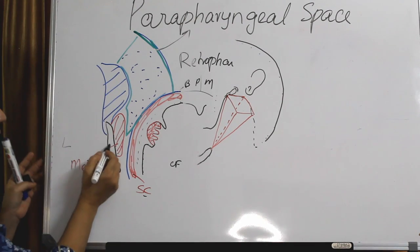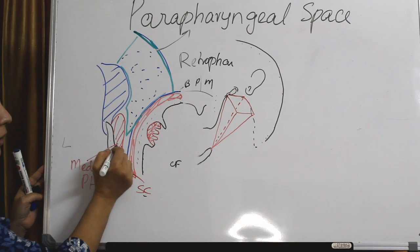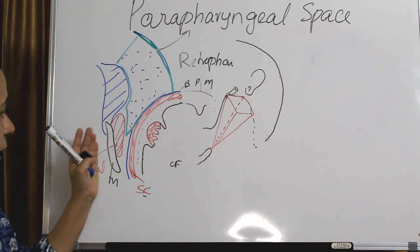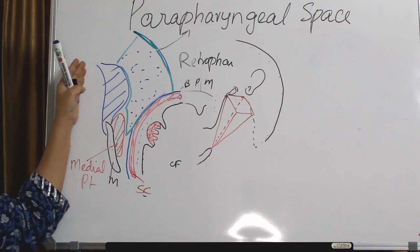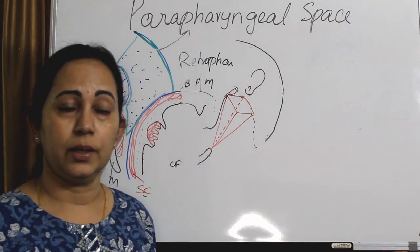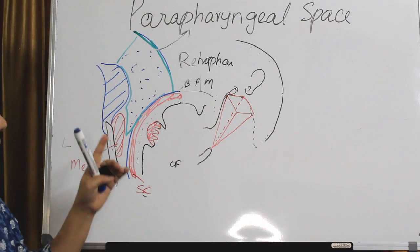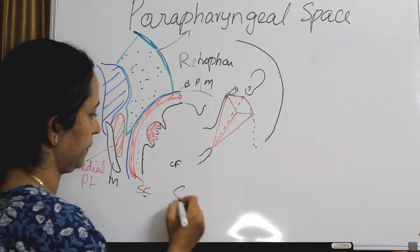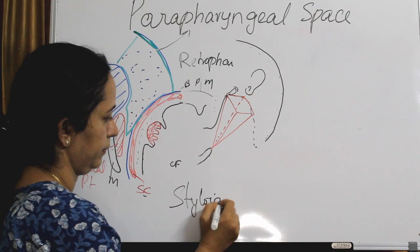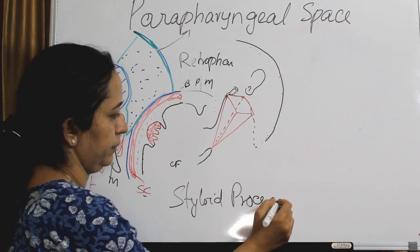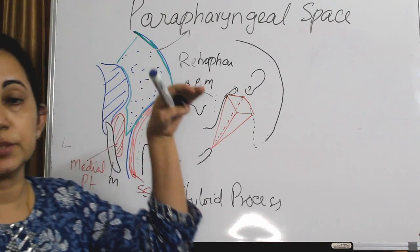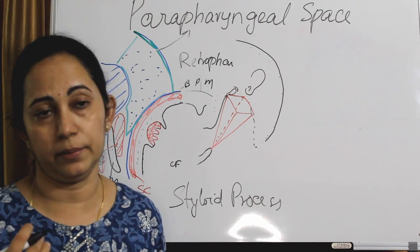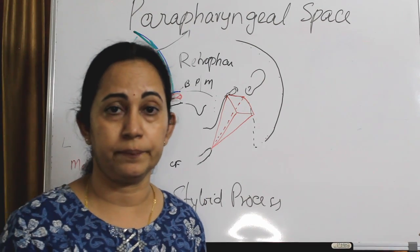The lateral relation is the superficial layer of deep cervical fascia covering the mandible, medial pterygoid muscle, and parotid gland. From the skull base, the styloid process projects into this parapharyngeal space. The styloid process actually divides the parapharyngeal space into a pre-styloid compartment and a post-styloid compartment.